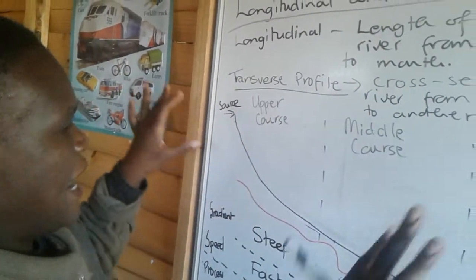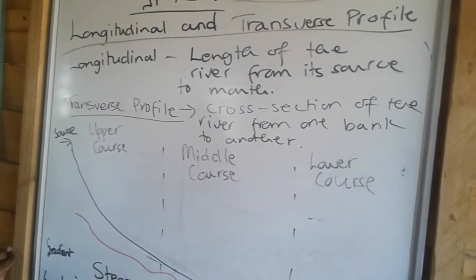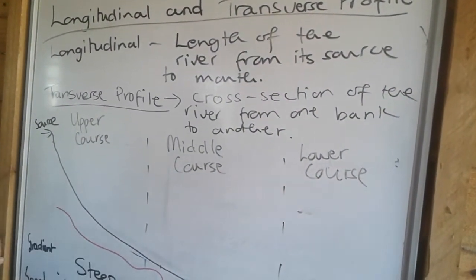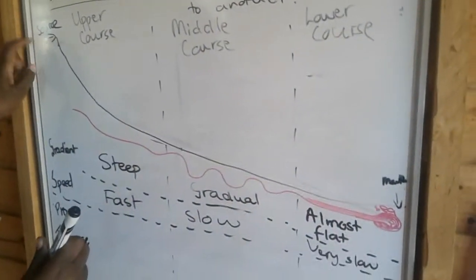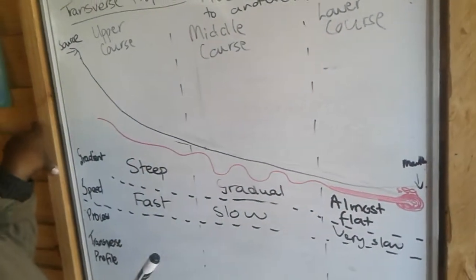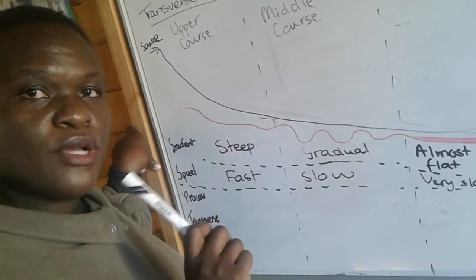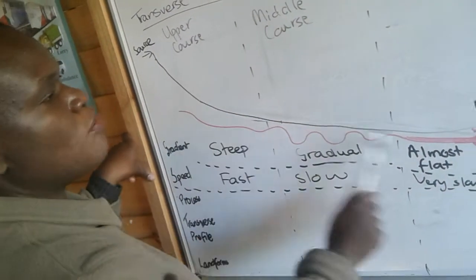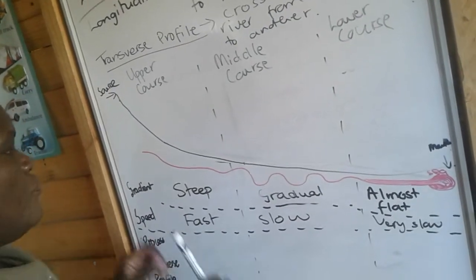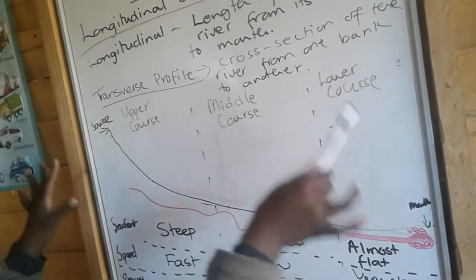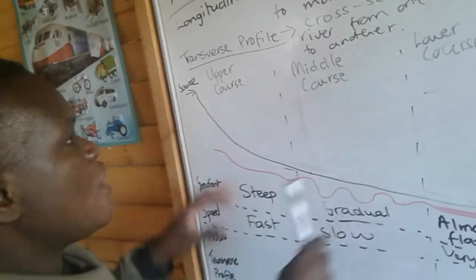I have drawn for you a longitudinal profile of a river here, and it shows the length of the river from the source to the mouth. The source is where the river starts to flow from, and remember rivers flow from high points to low points — so at the end of the river is where we get the mouth.